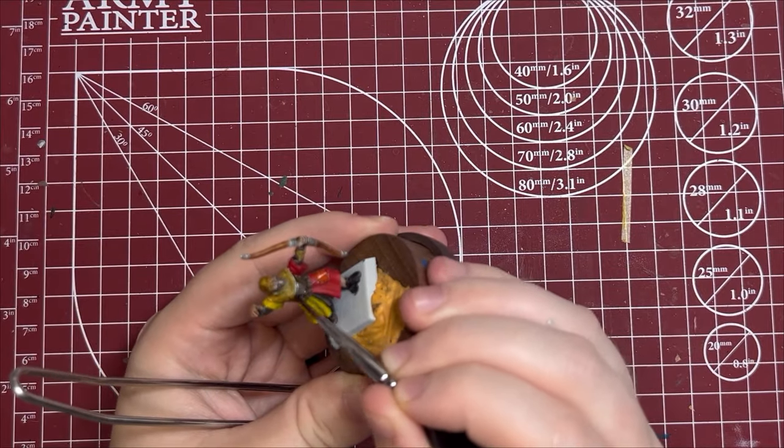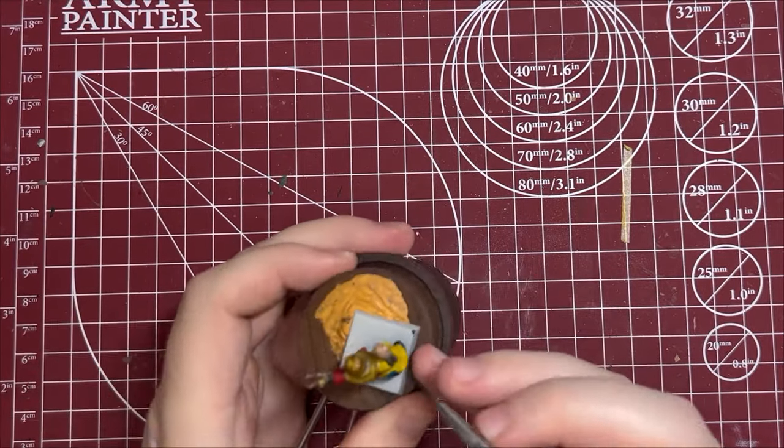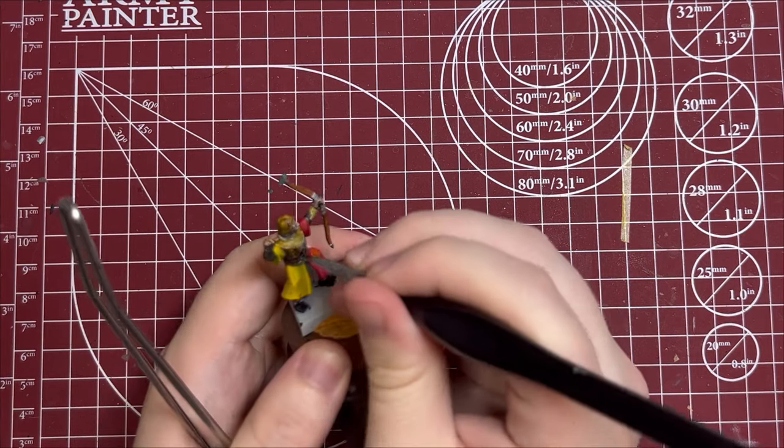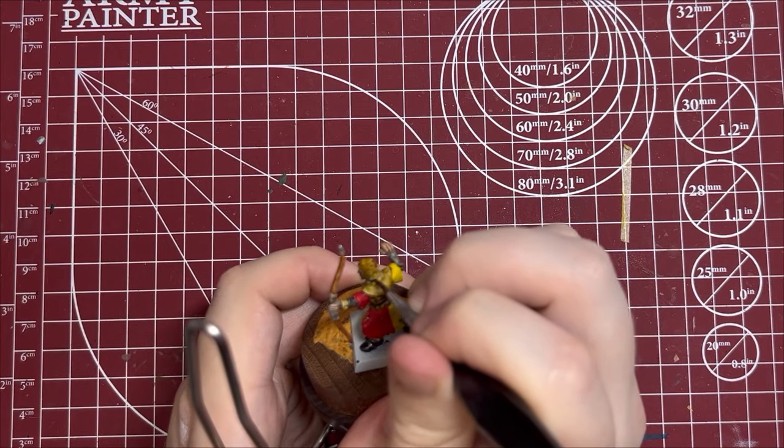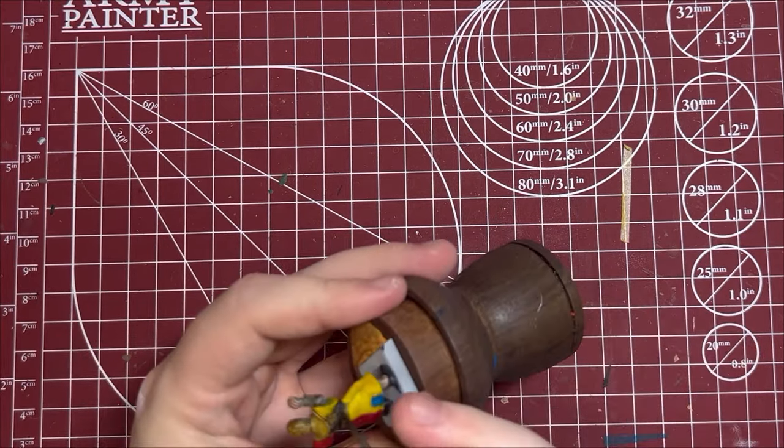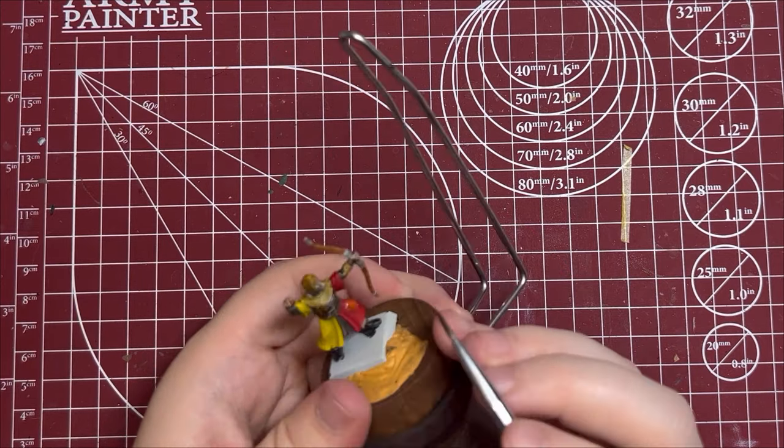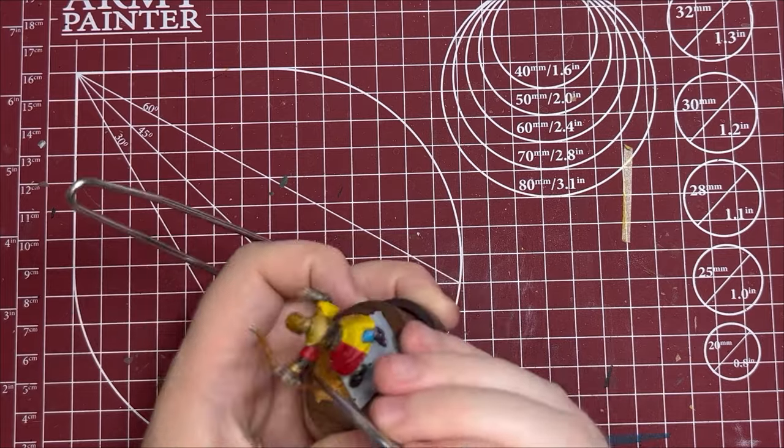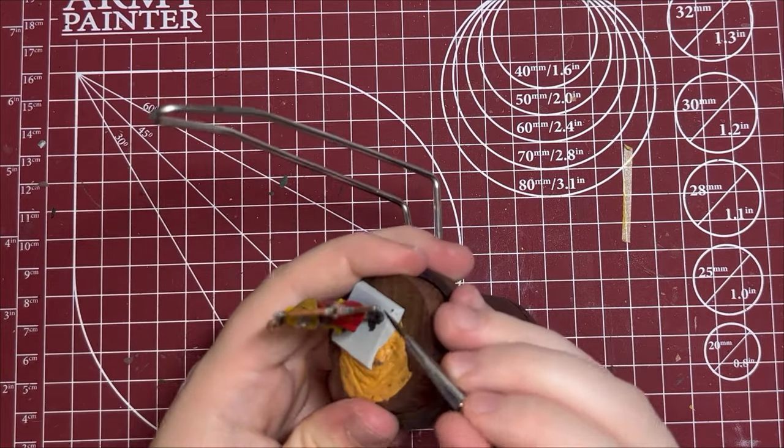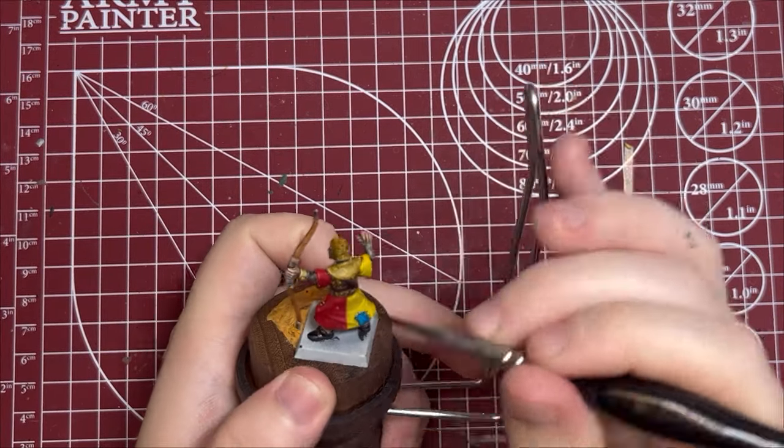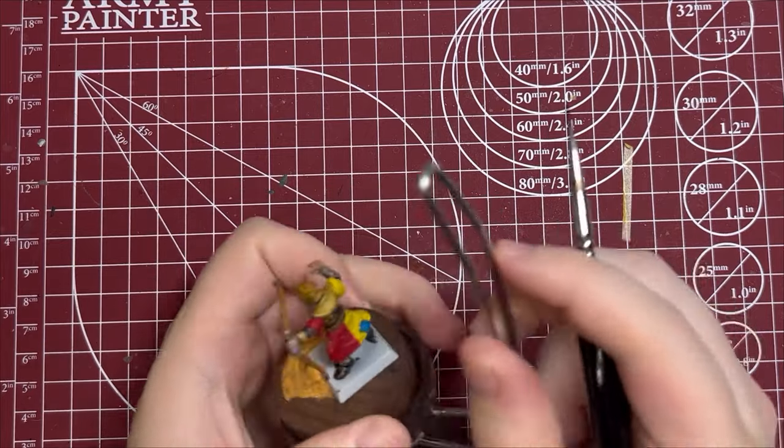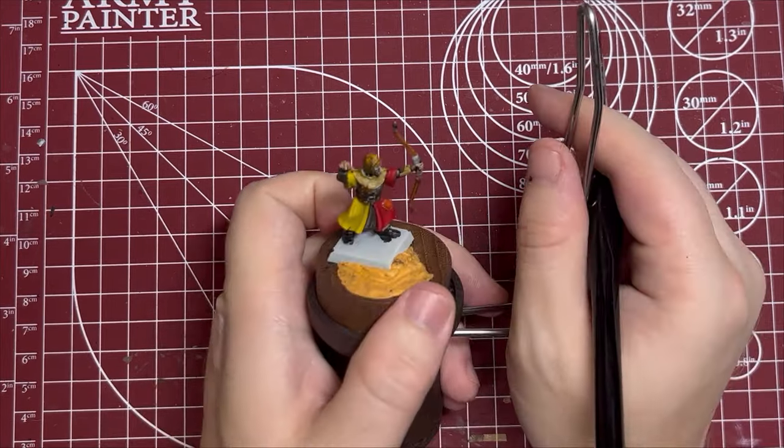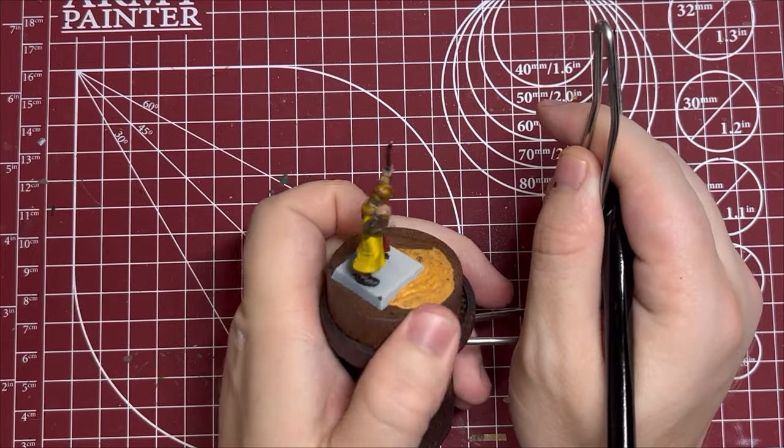And finally, we're going to take some Nuln Oil and hit our metallics. Now hit some of our lines in the model. I don't know, maybe right here. So the transition from the leather to his jacket makes a little bit more sense. Neckline is not a bad idea. Just going to help to add a little bit of additional depth to the model. Maybe right here. All of our leathers come together. Anywhere else she feels appropriate.